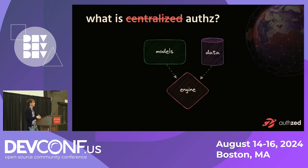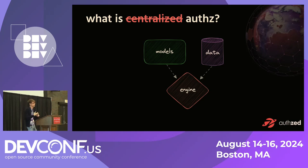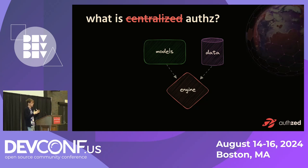Models are the rules that define and govern the actions that can be taken — they're static tools you define ahead of time. Data is live and can be changing — it's the information about actors, actions, the object of the action, and any related context. And then you have an engine. Both model and data feed into the engine, which applies the model to the data to make a decision about whether someone has access.